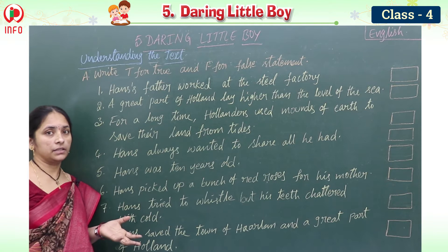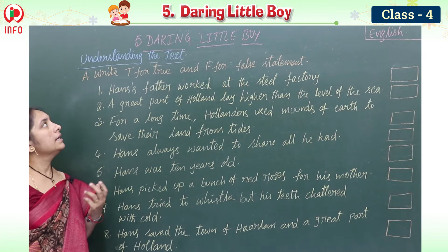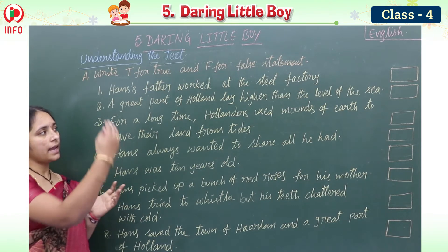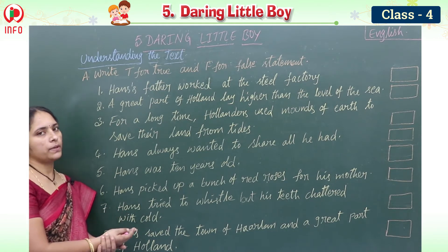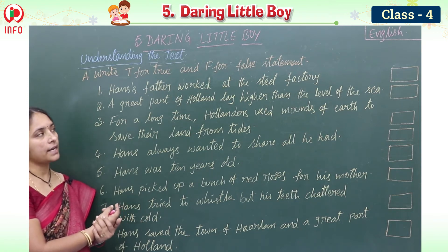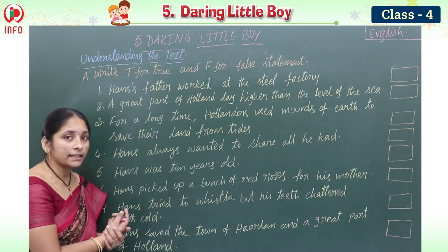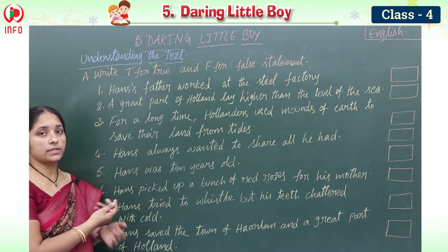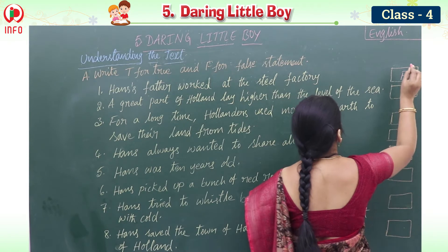In the workbook, for this lesson, the first part is to write T for true and F for false. They have given eight sentences from the lesson. We should identify which ones are true and which are false. For example, the first one: Hans' father worked at the steel factory. He was actually working at the dike, opening and closing the gates, so this is false.